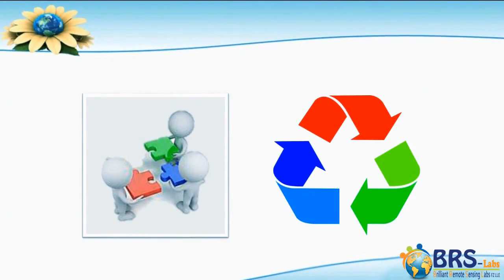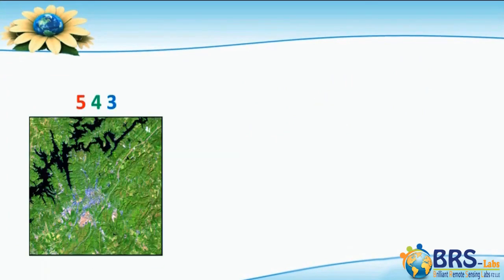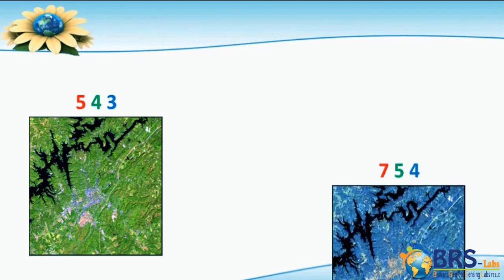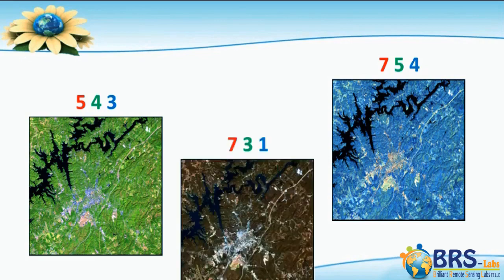Now I will let you try a couple of different band combinations so you can notice the difference yourself. If you choose the band combination 5, 4, and 3, you will be able to see the condition of the plants. The bright green color shows that the plants are in good condition. As for the band combination 7, 5, and 4, it clearly shows the coasts and helps in geological study.